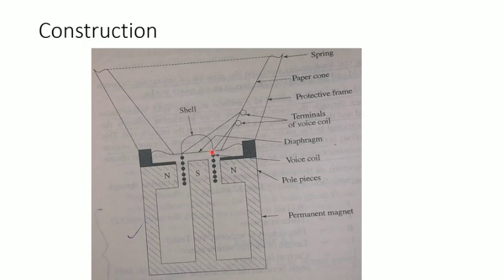The diaphragm vibrates with the air pressure variation. When sound hits the microphone, the air drum causes the diaphragm to vibrate, and the net effect converts the sound signal into an electrical signal — that is how the loudspeaker works.